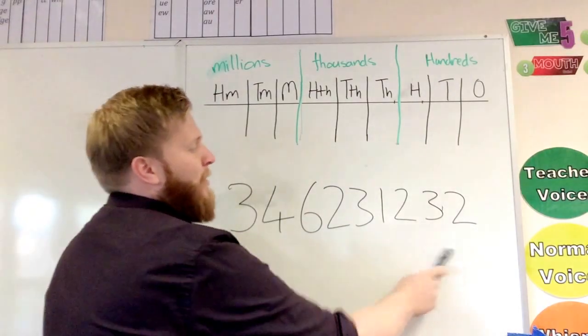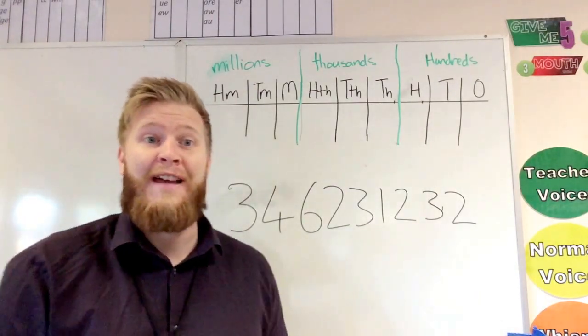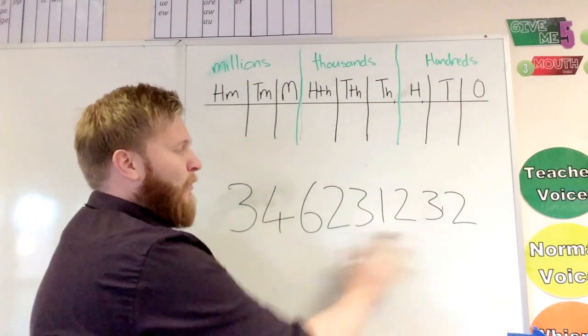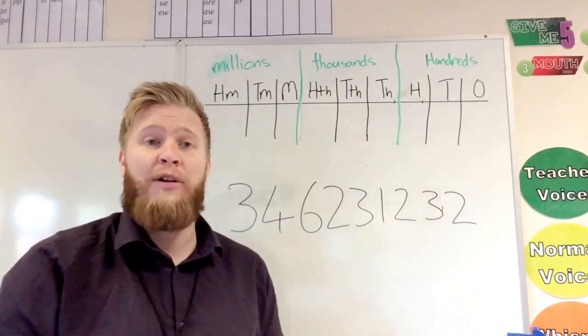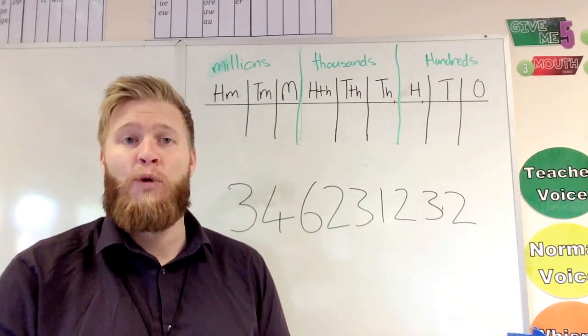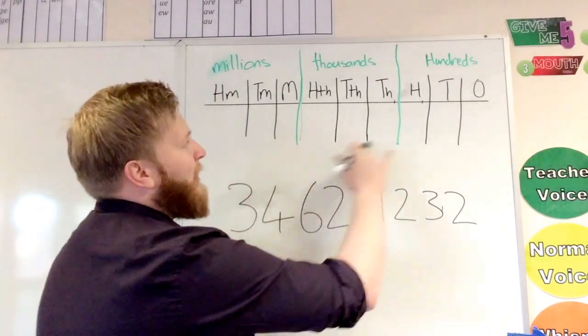Now this number on the board here is a number in the 100 millions and when you're first looking at that, if you've not read numbers like that before and you've not wrote them, it looks like it's going to be really hard to read but it's really quite simple. As you can see above, we've got our place value grid.